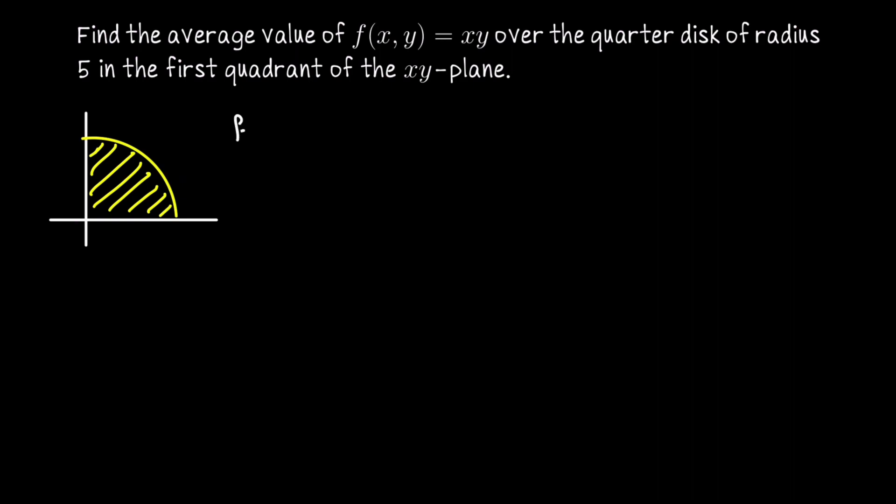To compute the average value of f, we're looking for a number, the average output, if you will, of this function over this domain. And we get to it by integrating over this domain, let me call this D, the function divided by the area of the domain, which you can always compute by double integrating 1 over that domain.